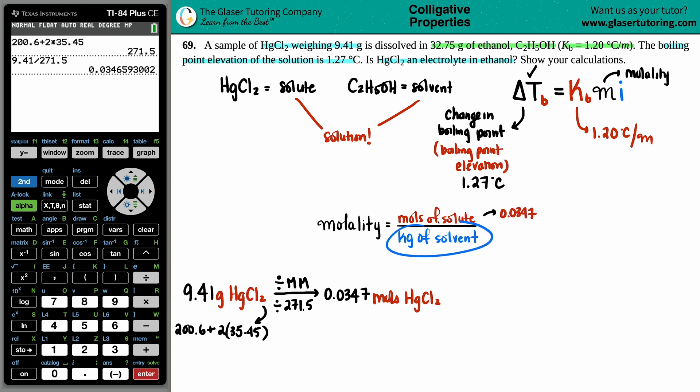Now, the next thing is, do we have the kilograms of the solvent? We did say that the ethanol, the C2H5OH, was the solvent, and they gave us 32.75 grams. But we want kilograms. So, how do we go from grams to kilograms of the ethanol? Well, grams to kilograms, that's just dividing by 1,000. Similarly, take the decimal, move it to the left three times. So, we get 0.03275. That looks good to me.